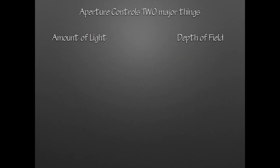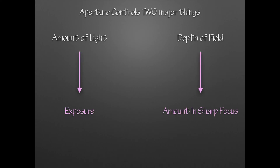Aperture controls two major things: one is the amount of light, which leads to the exposure, and the other one is depth of field, which is the amount in sharp focus.